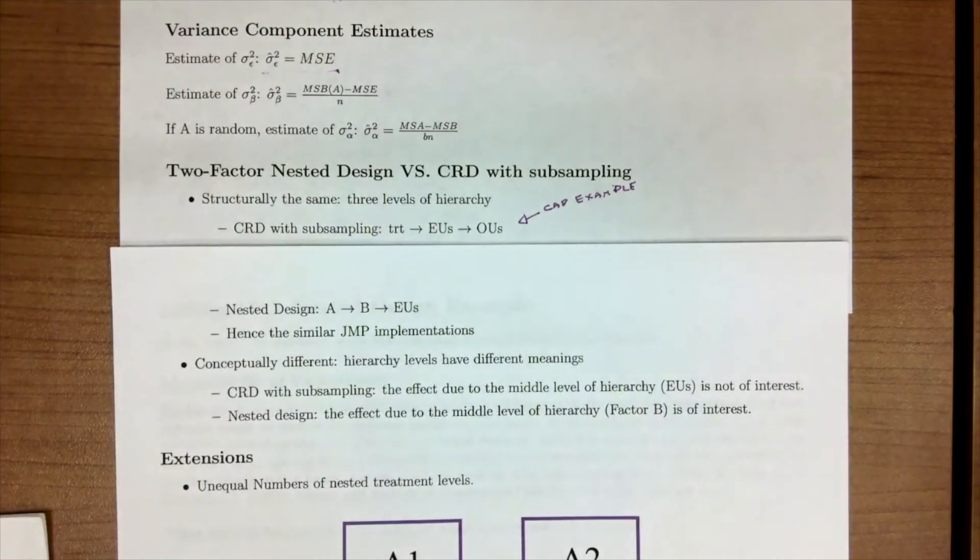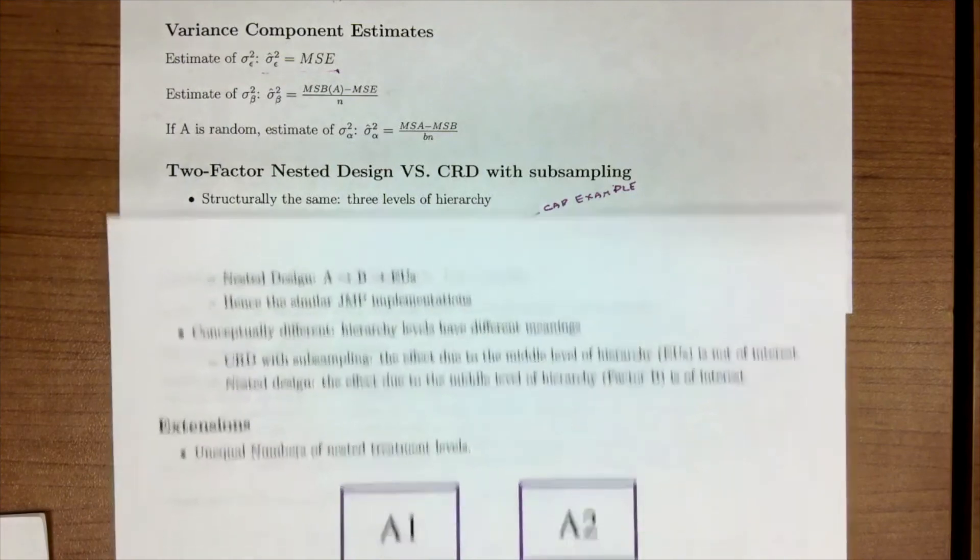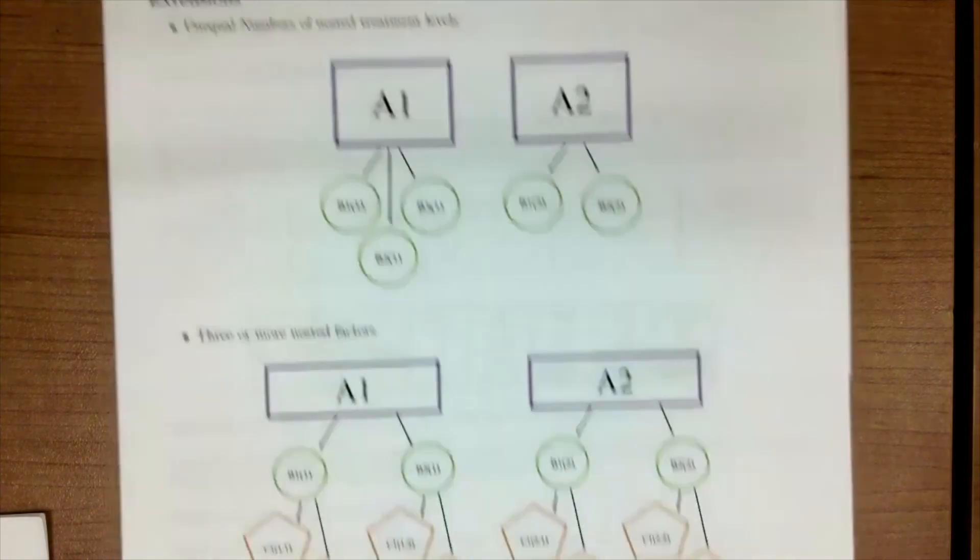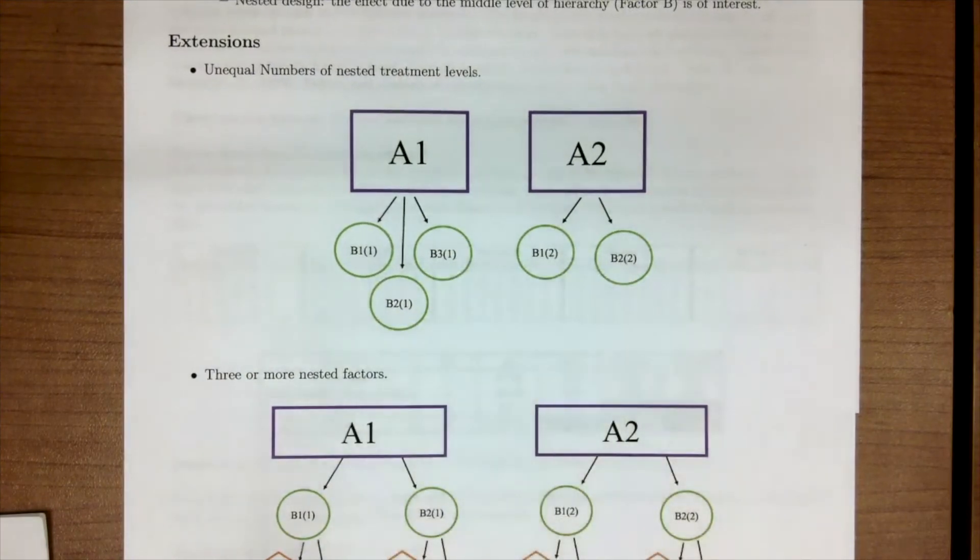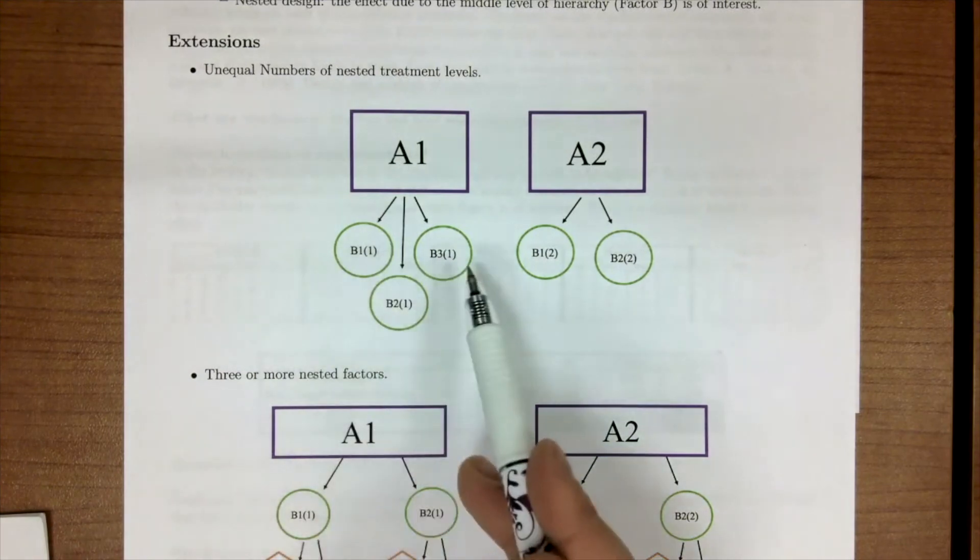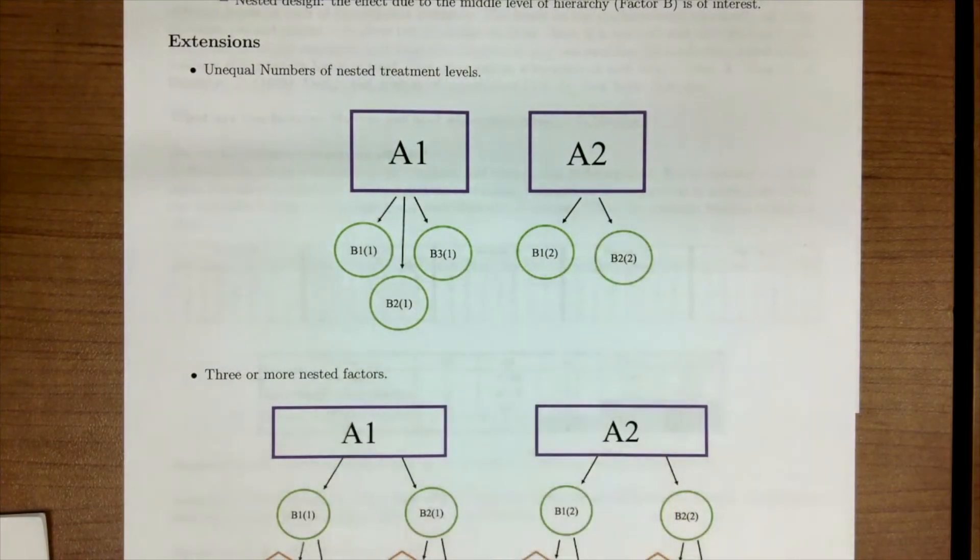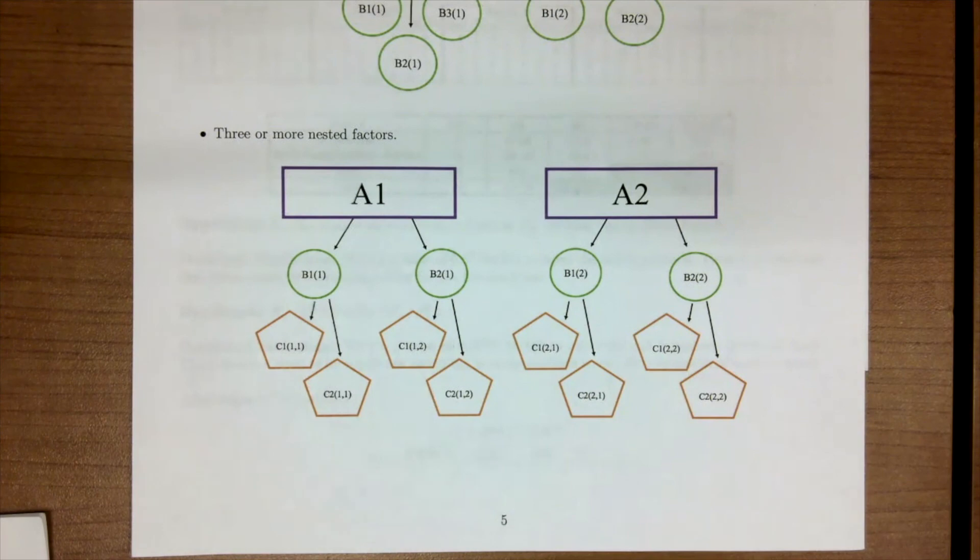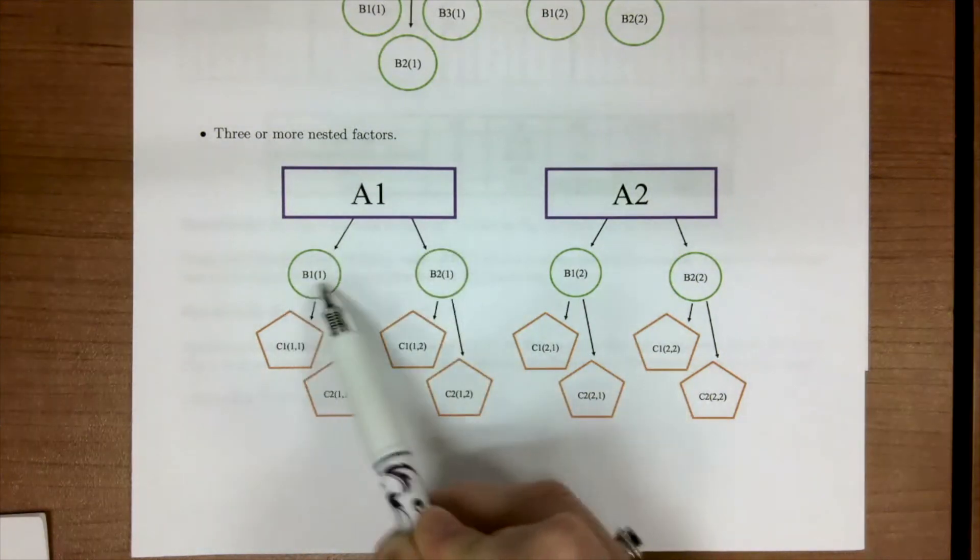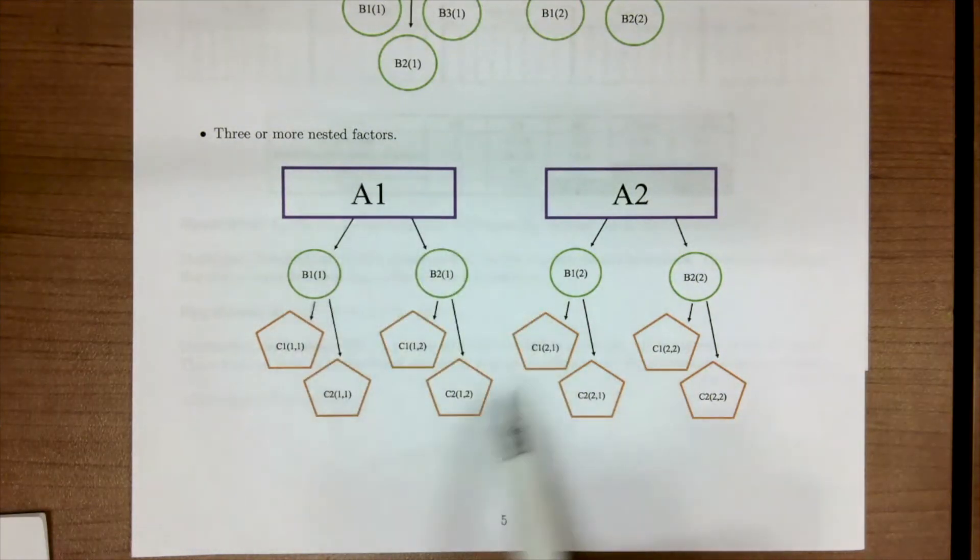There's also, with nested design and a lot of the designs we've talked about, there are some extensions. The first extension could be if we don't have equal number of nested treatments. Maybe factory one in our plastic example has three operators, and factory two only has two operators. We could also include more nested factors. So we have one nest and then we have another nest. This looks a little bit more similar to our plastic example.